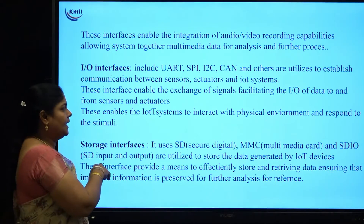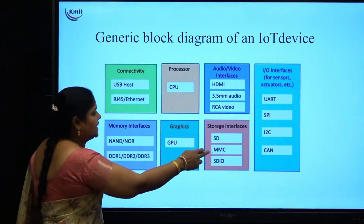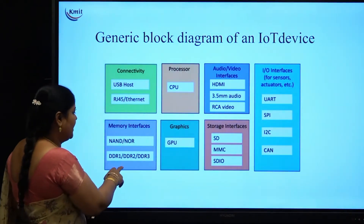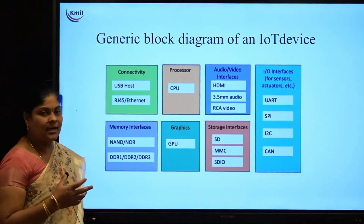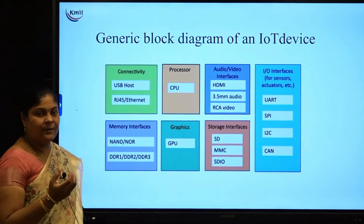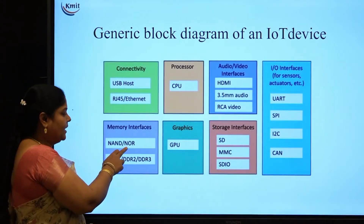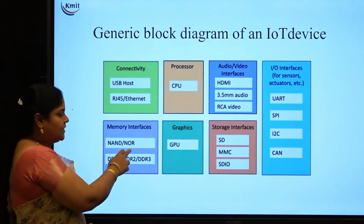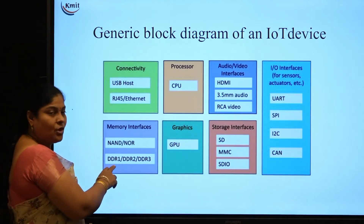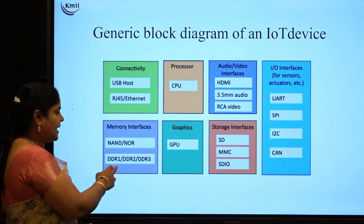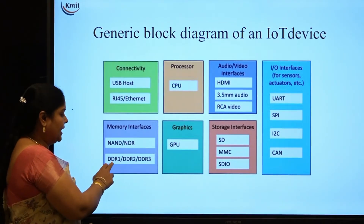The next type of interface is the memory interface. Memory interfaces are used to store data received from sensors or actuators. Different types of memory gates like NAND gates and NOR gates are used to store data in memory spaces.